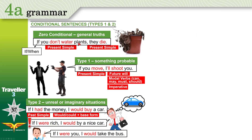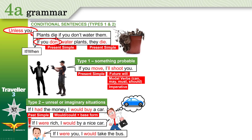We can replace 'if not' with 'unless' and it gives the same meaning. 'If you don't water plants' becomes 'unless you water plants, they die.' We have two clauses: one — 'if you don't water plants,' two — 'they die.' You can start with either part. You can say 'plants die if you don't water them.' Notice that when you start with the if-clause, you need a comma. But 'I'll shoot you if you move' and 'I would buy a car if I had the money' — no comma needed when the main clause comes first.